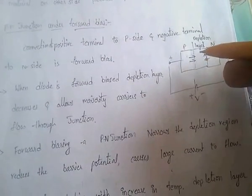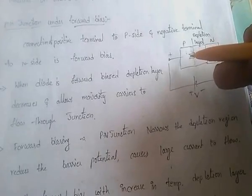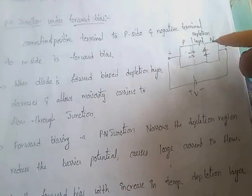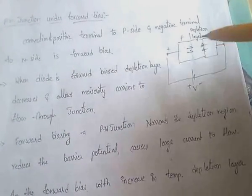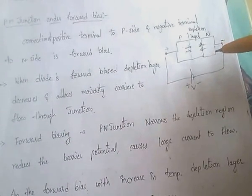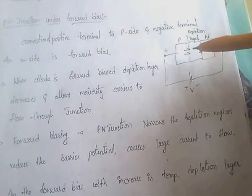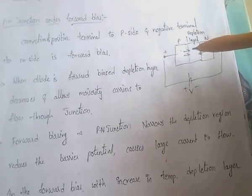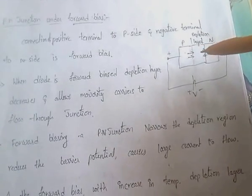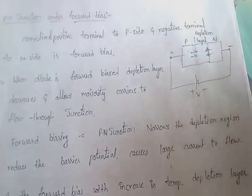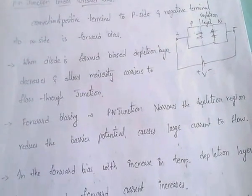As the depletion region decreases, it allows majority carriers to flow through the junction. In the case of forward bias, the width of the depletion region decreases and current flows through the junction.